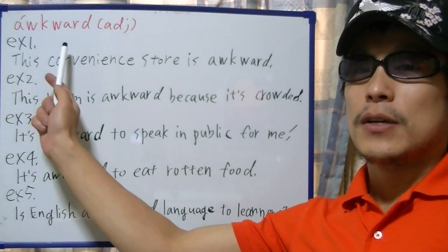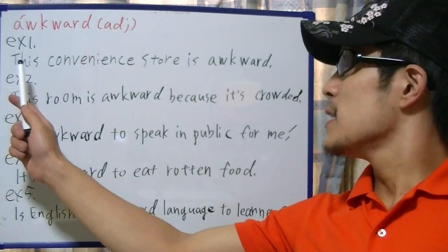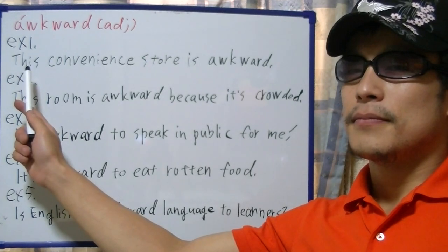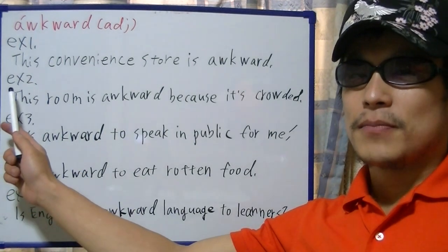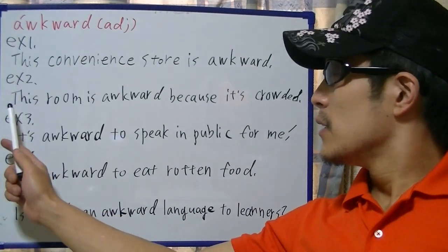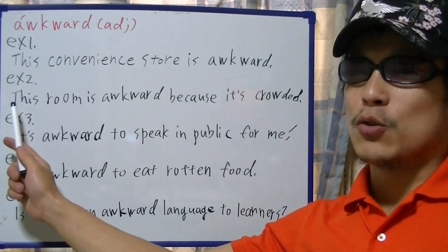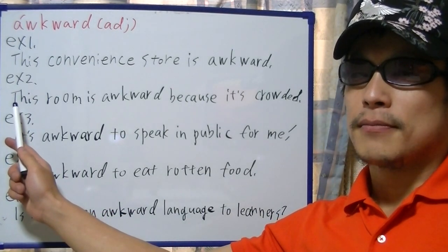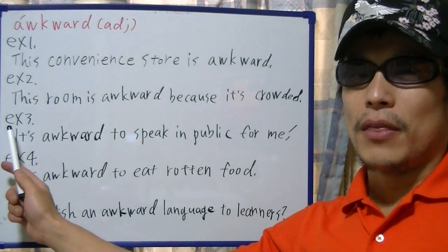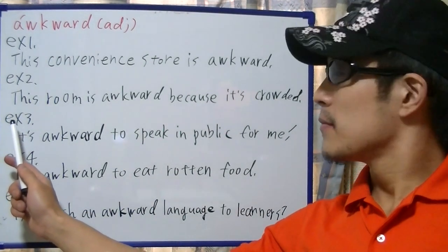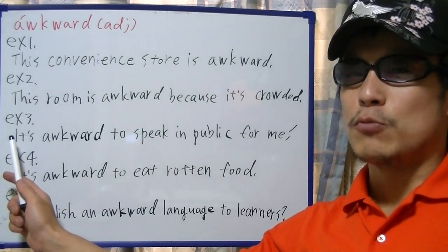Example 1: This convenience store is awkward. Example 2: This room is awkward because it's crowded. Example 3: It's awkward to speak in public for me.